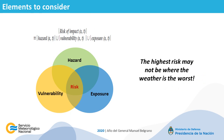Which are the elements to consider if we want to turn into an IBF warning system? As we saw earlier, one of the objectives of a warning system is to minimize impacts. But the risk of impact is the result not only of the hazard, but also vulnerability and exposure. This means that the highest risk may not be where the weather is worst, and that's why the three components need to be considered.